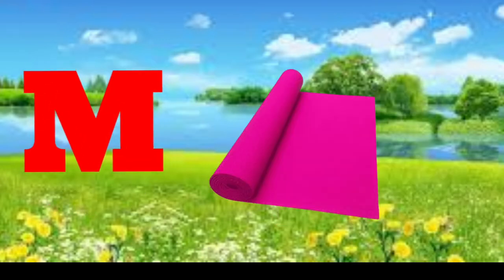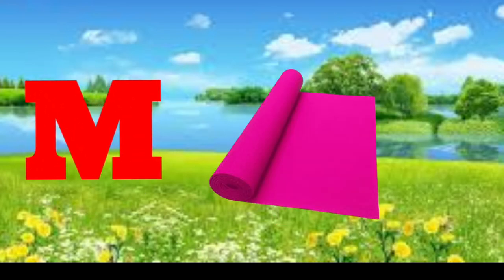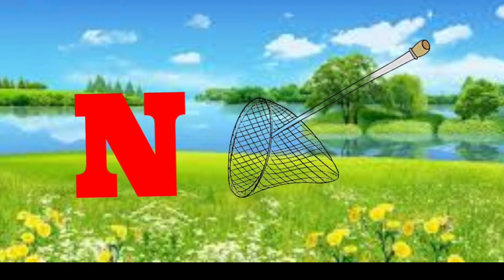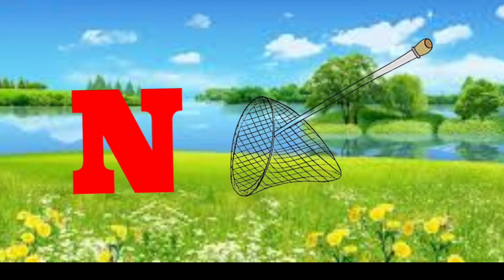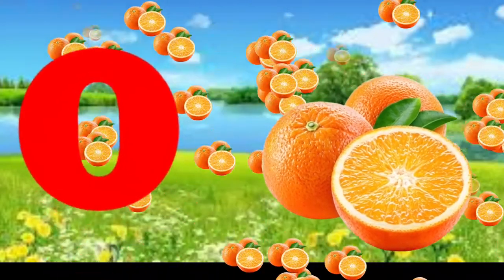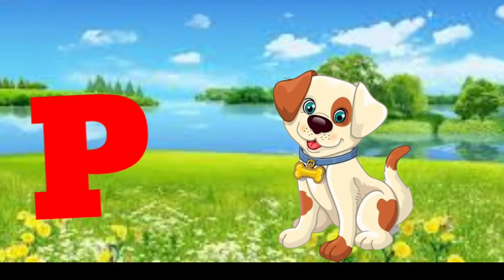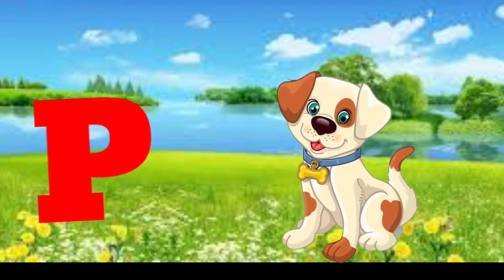M is for mat, m-m-mat. N is for net, n-n-net. O is for orange, o-o-orange. P is for pet, p-p-pet.